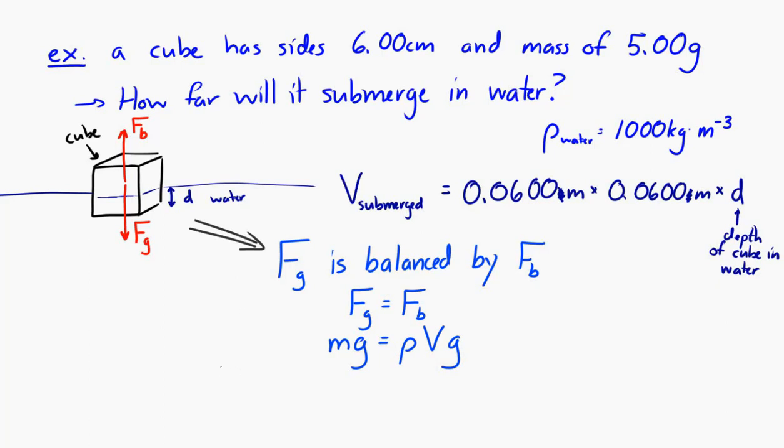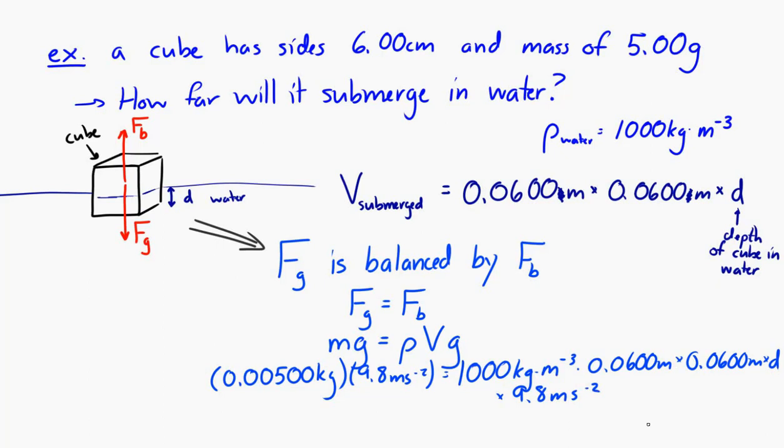Rho, we know. V we can write down because it's six centimeters times six centimeters times the depth to which it's submerged. And then g is just the gravitational acceleration. So if we solve for that, the depth to which it has sunk is 0.0136 meters, or 1.36 centimeters.